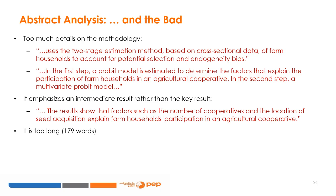Another problem is the use of the passive voice: 'a probit model is estimated,' 'a multivariate probit model is applied.' The use of active voice is strongly recommended to give a clear idea of what the paper does. Last but not least, this abstract is too extended — 179 words. It can be brought down to fewer than 150 words by keeping the discussion of the methodology more concise.